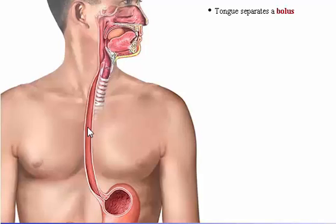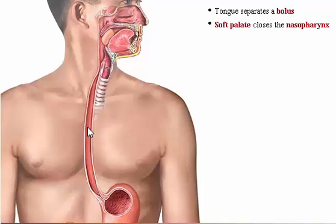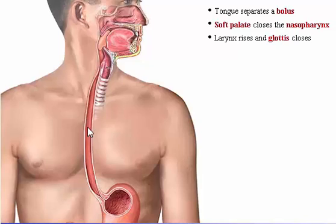A bolus of food is separated from the contents in the mouth by placing the tip of the tongue against the hard palate. The soft palate rises to close the nasopharynx, preventing the contents of the mouth from entering the nasal passageways. As the tongue moves backward, the bolus is propelled into the oropharynx. Respiration is briefly inhibited, the larynx is elevated, and the glottis closes, which prevents food from entering the trachea.